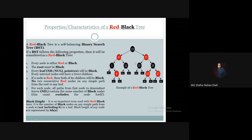If a node is black, its two children can be red. But if a node is red, its children cannot be red. As we can see, this red node has two children and they are both black.